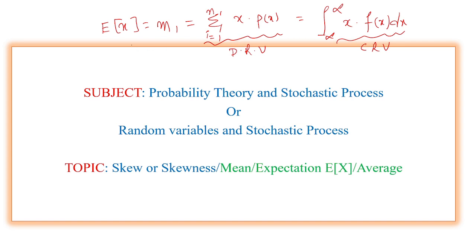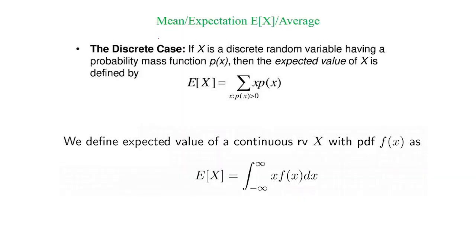If the first mean or expectation is not sufficient for analysis, then we go for the second mean. If the second mean is also not able to analyze the data properly for a given company, then we go for the third mean, which is called skewness. The first mean is the first averaging process.